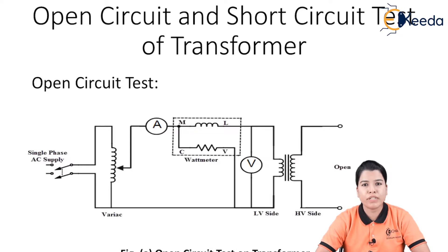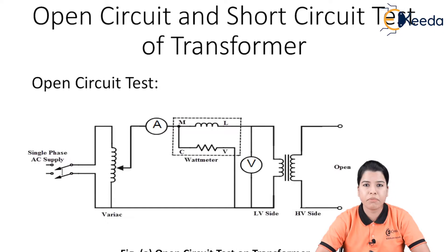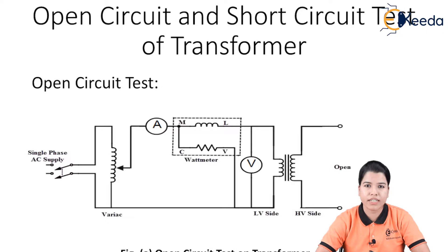In a transformer there are two main losses: iron loss and copper loss. Iron loss depends upon voltage, whereas copper loss depends upon current. By performing the open circuit test and short circuit test, we can determine the value of these losses as well as various circuit parameters of the equivalent circuit.